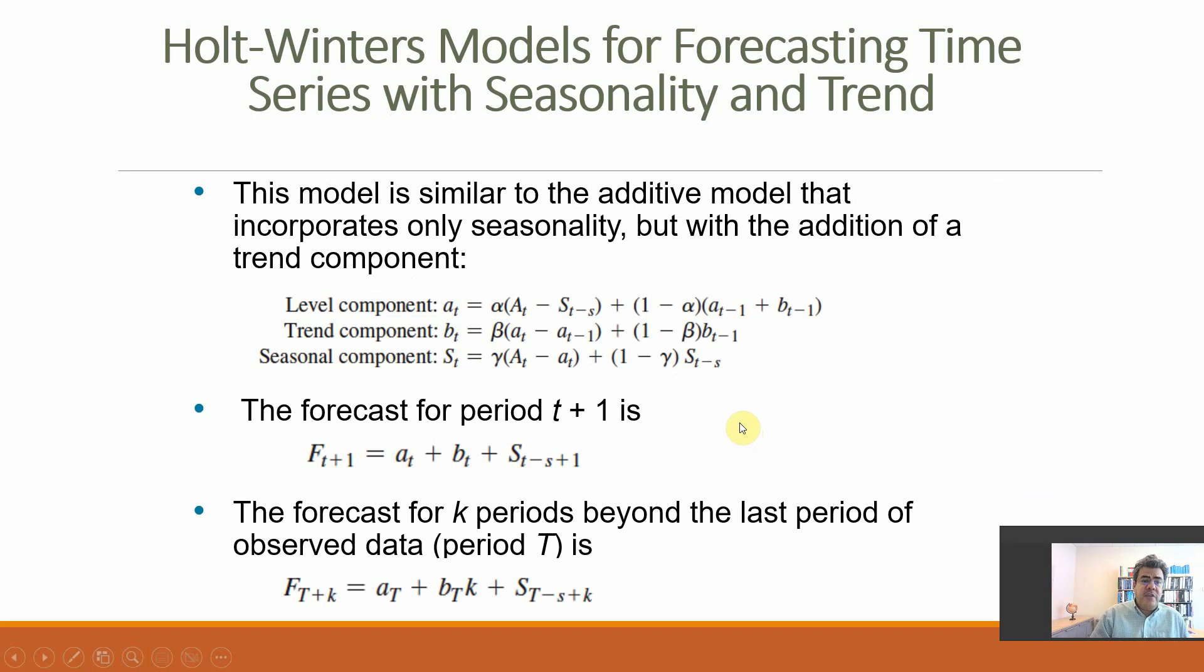And here we have the formula, so we need three components now, alpha, beta, and epsilon. So with these three components, the level is alpha times actual number minus the seasonality component or the seasonal component T minus S, so this same month or quarter of the previous year, plus 1 minus alpha multiplied by A T minus 1, plus B the trend component T minus 1. So that is the level component.